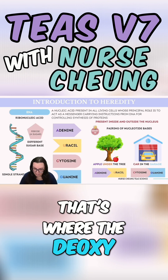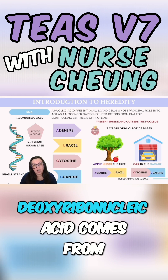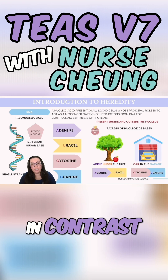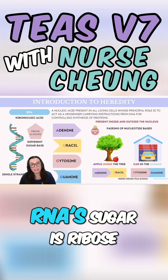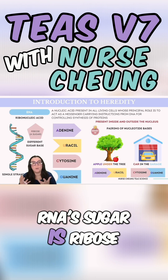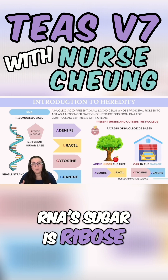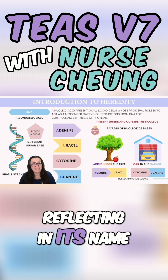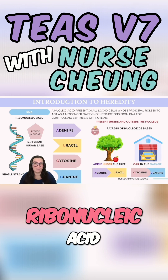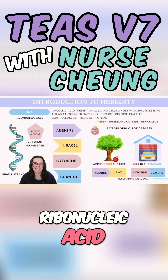That's where the 'deoxy' at the front of deoxyribonucleic acid comes from. In contrast, RNA's sugar is ribose, reflecting in its name, ribonucleic acid.